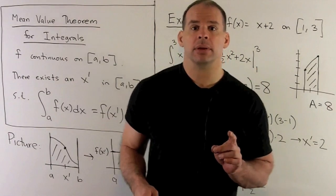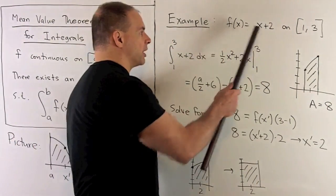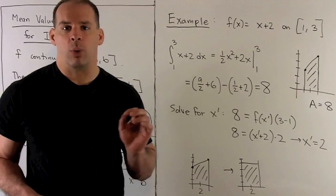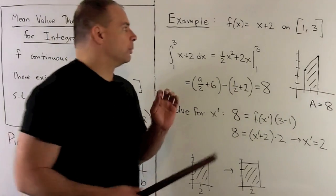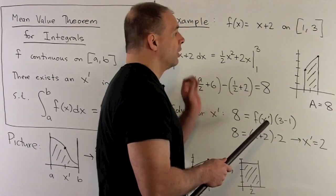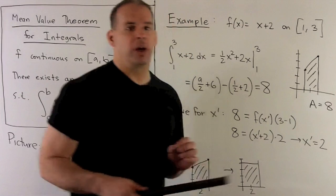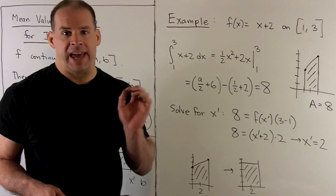Let's take a look at an example. So, we're going to take the function f(x) = x + 2 on the interval from 1 to 3. So, if we plot this, f is just a straight line, slope 1, y-intercept 2. So, our region is a trapezoid, the area is going to be equal to 8.